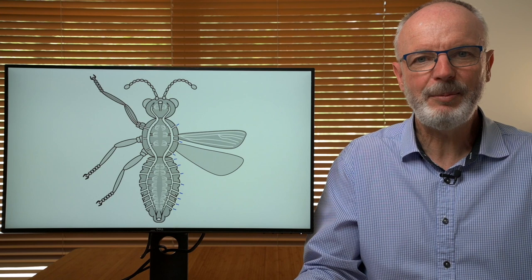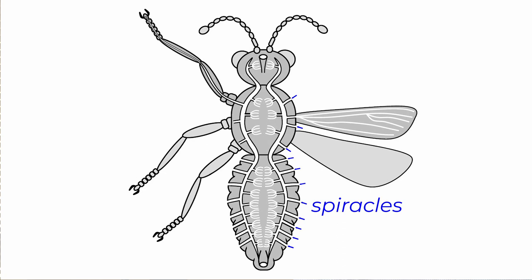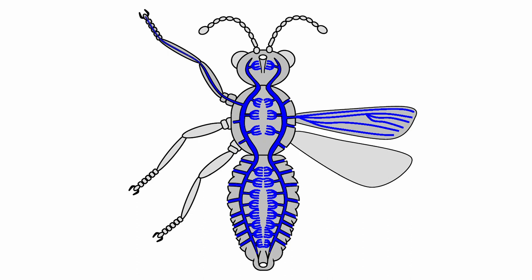Insects don't breathe through their mouthparts. Air typically enters their respiratory systems through a series of external openings known as spiracles. I've indicated their presence on one side by these blue arrows, and there is a corresponding set on the other side. The spiracles, which open and close like valves, lead to an internal respiratory system which is basically a network of tubes known as trachea.